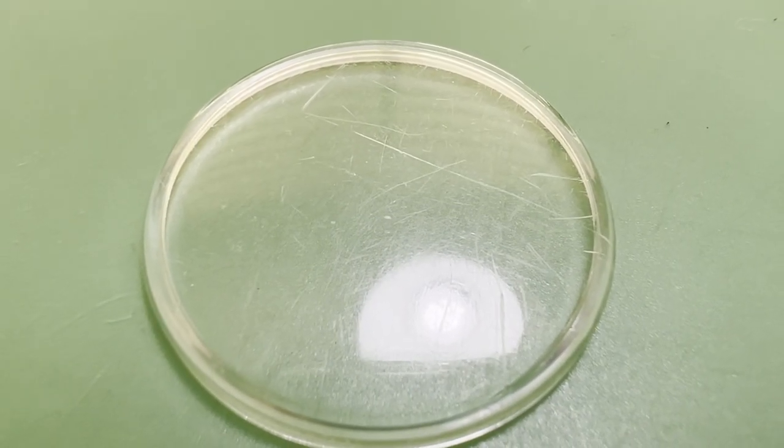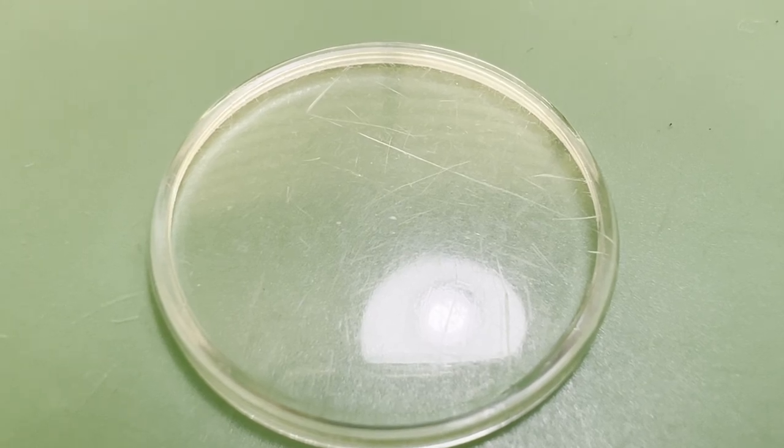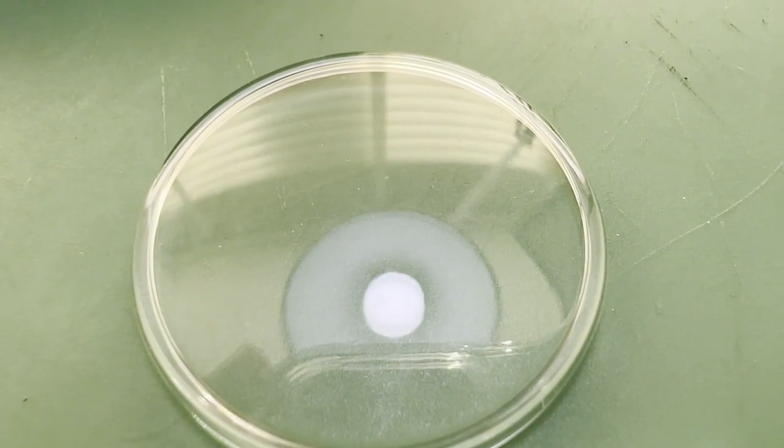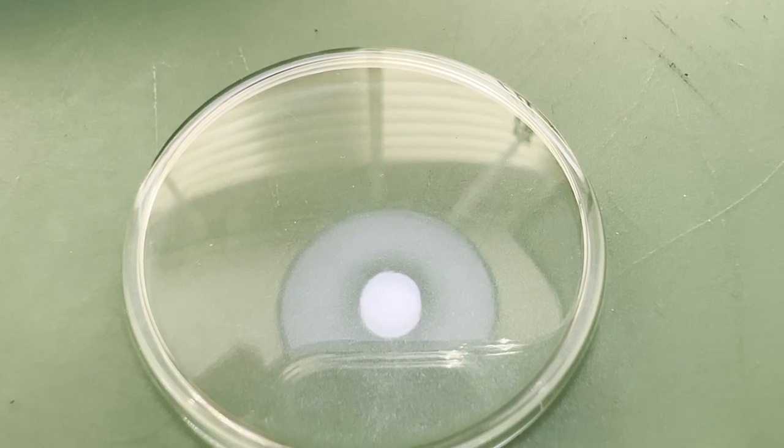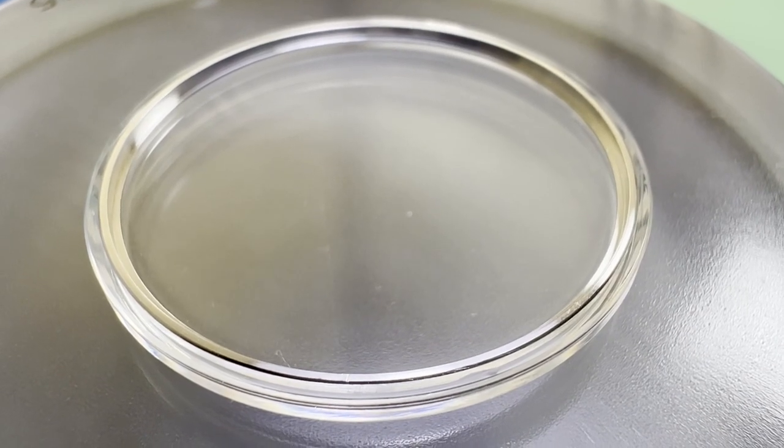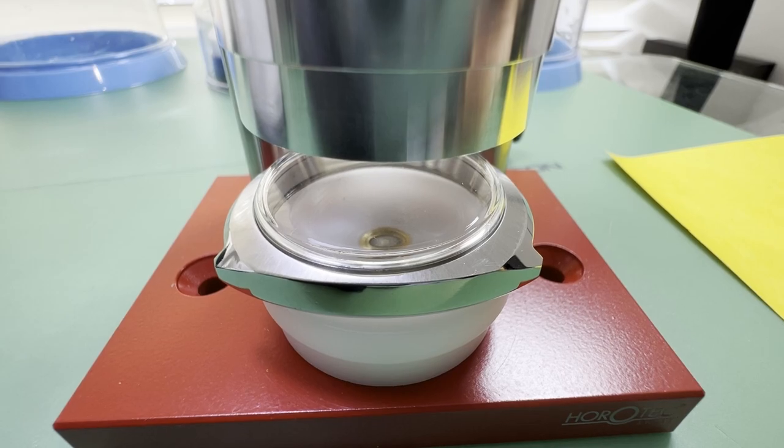The same treatment that was given to the case is given to the Omega logoed crystal. The surface is refinished with a few grades of wet and dry paper and then polished with polywatch. The crystal then has its tension ring replaced. It is then pressed back into the case.